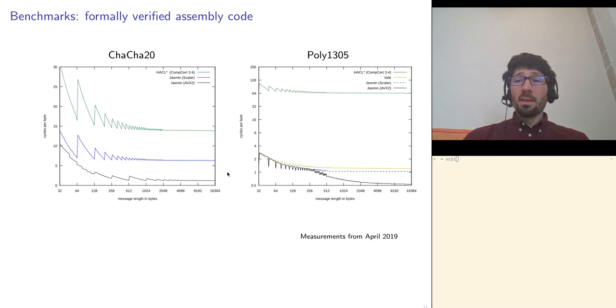Also, if we focus on formally verified assembly codes, we can observe a few things. Here, for instance, these two curves correspond to the same code, but here, compiled with CompCert, and there, compiled with Jasmin. What I would like to highlight is that using a verified compiler is not necessarily bad for performances, because in Jasmin the programmer has enough control on the assembly that is generated to avoid paying a penalty for using a certified compiler.